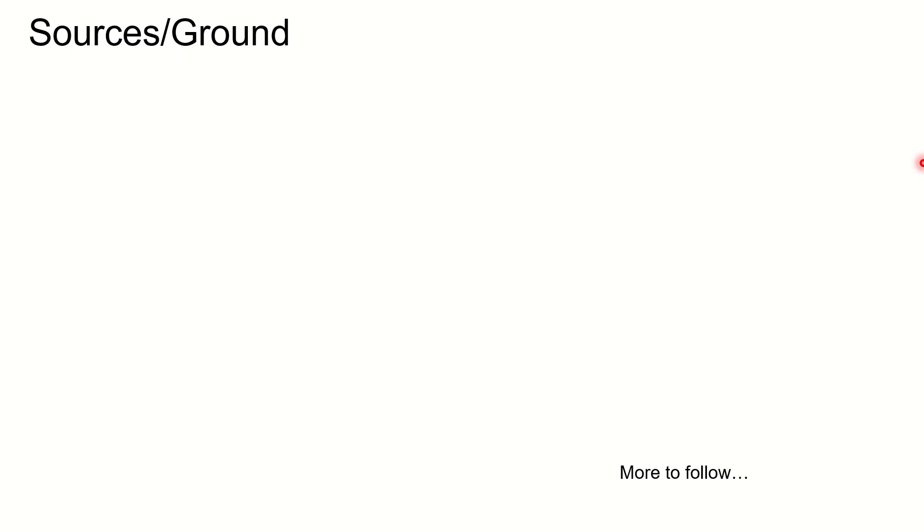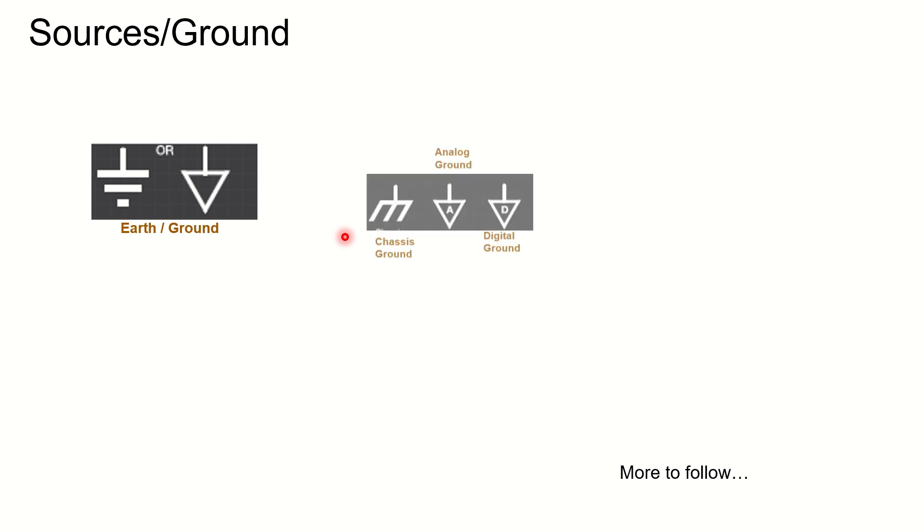Sources and ground - how do we represent them? This is how you need to represent the ground. It can be either this way or this way. This is the earth and ground, and you can see that this is called chassis ground. This is analog ground. This is digital ground. There are a lot of differences. Please watch it carefully. This is chassis ground, this is analog one and this is digital one.